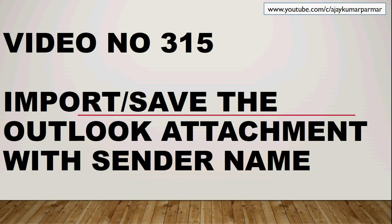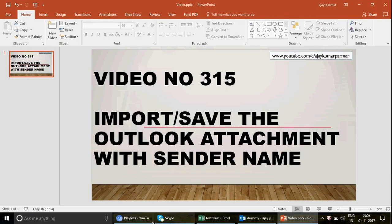One is to import the information in Excel — for example, if somebody has sent you an email and you want to see the date, the file name, the attachment name, the sender email address, and all that stuff, we would like to import that information in Excel. The second thing is saving that file to your C drive, D drive, or whatever location you have.